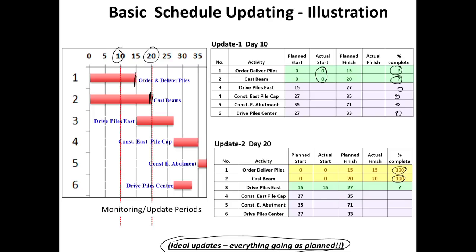So 0 and 100 are okay to enter; the challenge is how do I calculate percentage complete in between. When we look at the update on day 20, we can see that the first two activities are complete, and drive piles east is going on — it is highlighted in green here. It started as scheduled. The question again is: it has made progress, but what is my percentage complete? The other activities which have not started are of course 0, because nothing has been started on those.